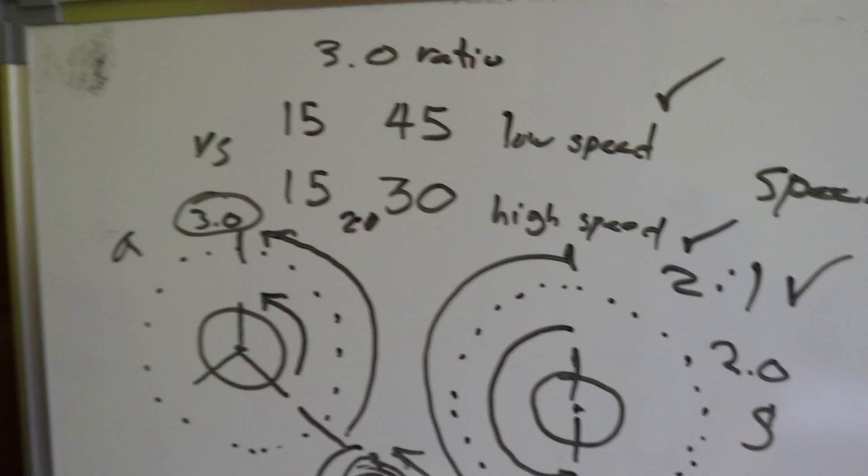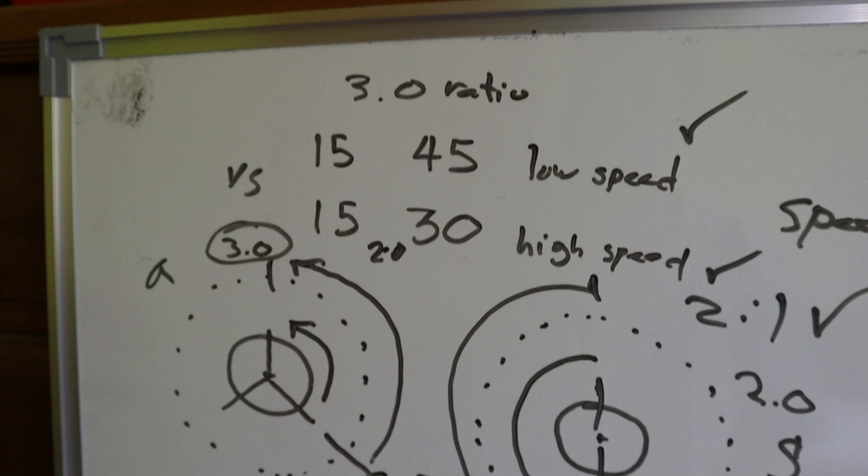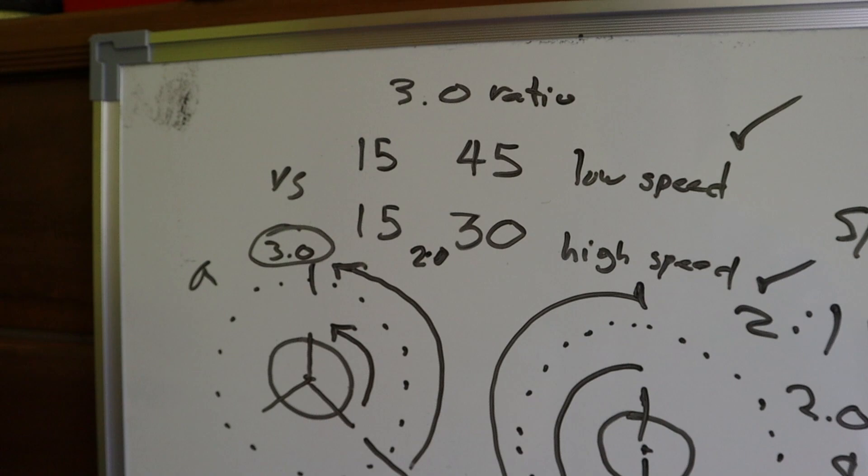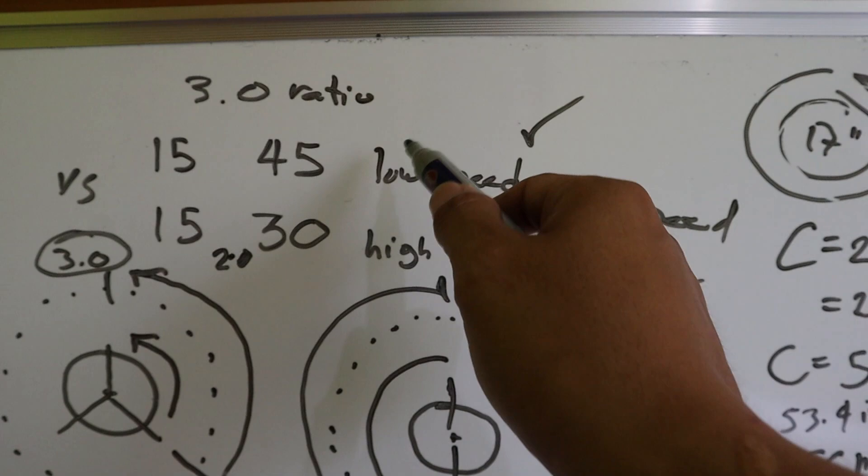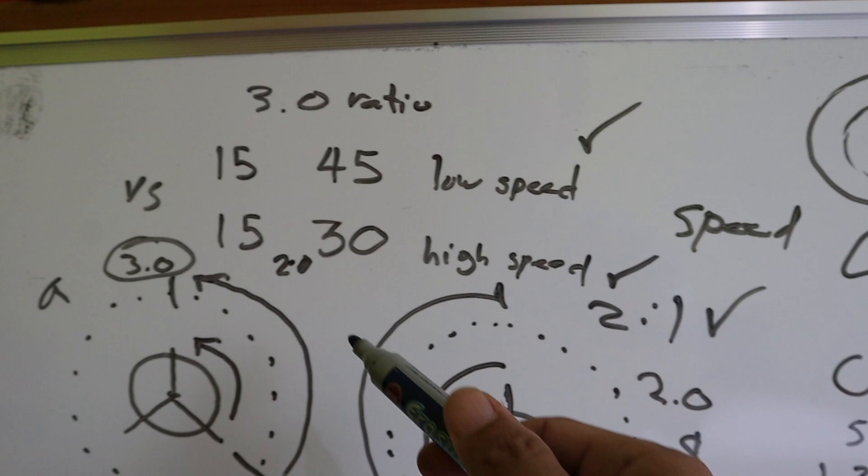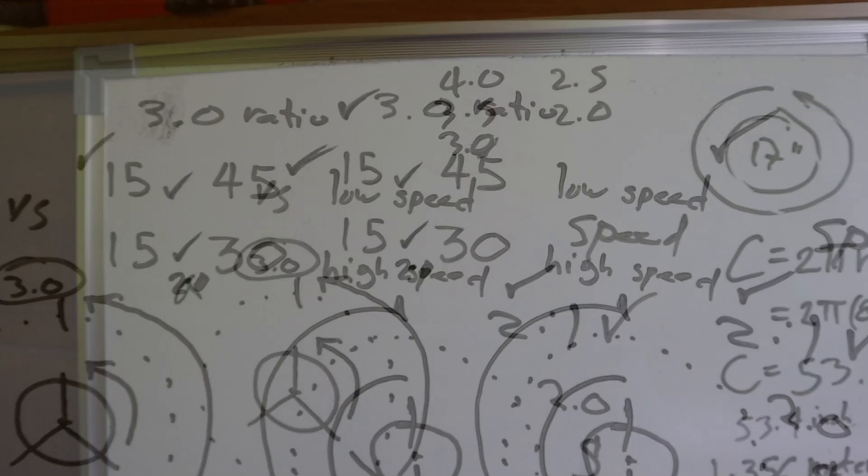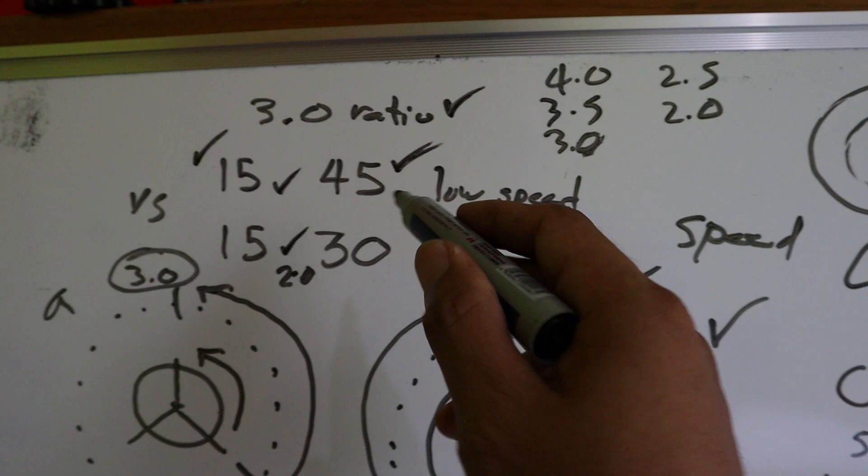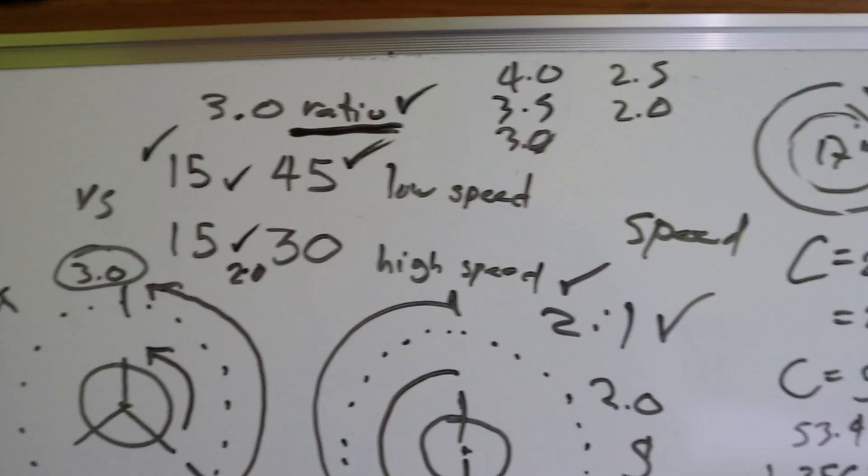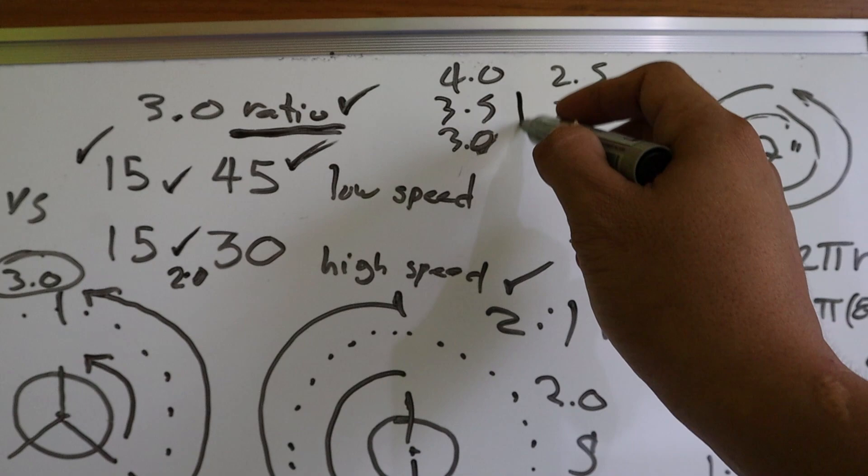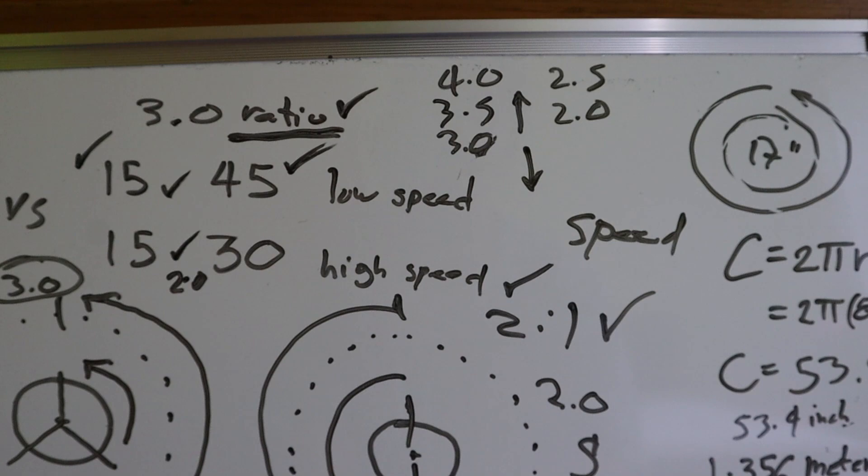Despite sa mga informasyon na na-publish sa internet, marami pa rin nagtatanong, ano po ba ang the best sprocket combination? Kaibigan, walang the best sprocket combination. Ang the best para sa akin ay the best para sa akin. Ang the best para sa iyo ay maaaring hindi the best para sa akin. Kaya ang guide para sa iyo para malaman ang the best sprocket combination ay malaman kung paano kumuha ng sprocket ratio. Sa pamamagitan niyan, makukumpara mo ang mga ibat-ibang combination. Yan ang mapapala mo sa pag-alam ng ratio ng sprocket.